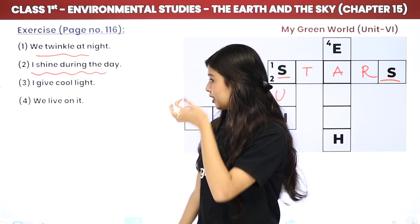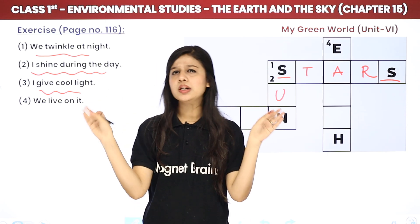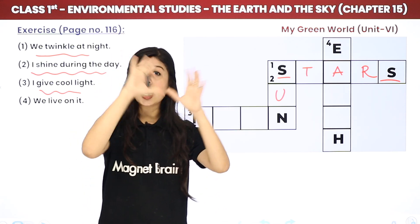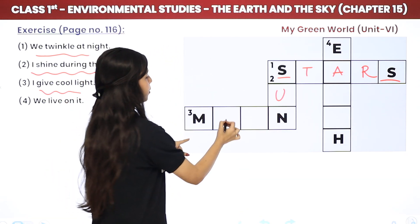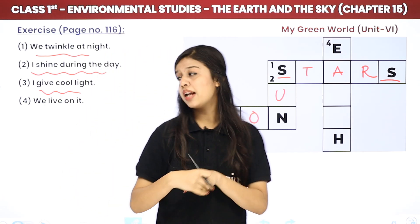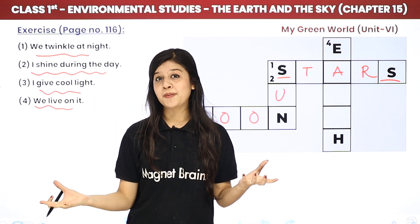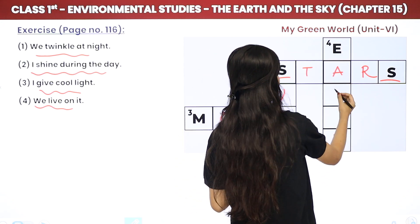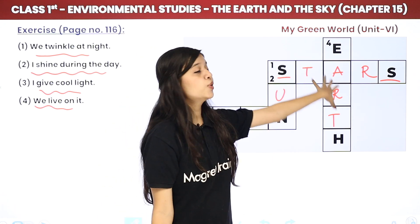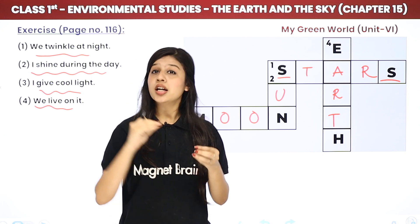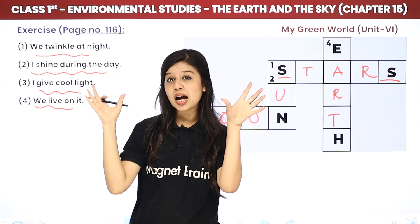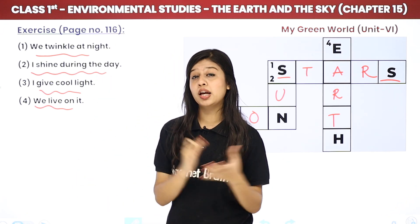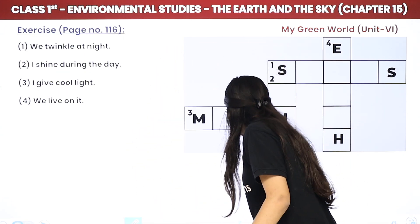Yes, it's the SUN — S-U-N. Next clue: 'I give cool light.' Aisi kaun si cheez hai jo thandi thandi cool light deti hai, dhire dhire kam light deta hai, aur raat mein hi dikhta hai? Yes, it's the MOON — M-O-O-N. Ab last clue hai: 'we live on it.' Hum jis pe rehte hain — can you guess it? Yes, it's EARTH — E-A-R-T-H.